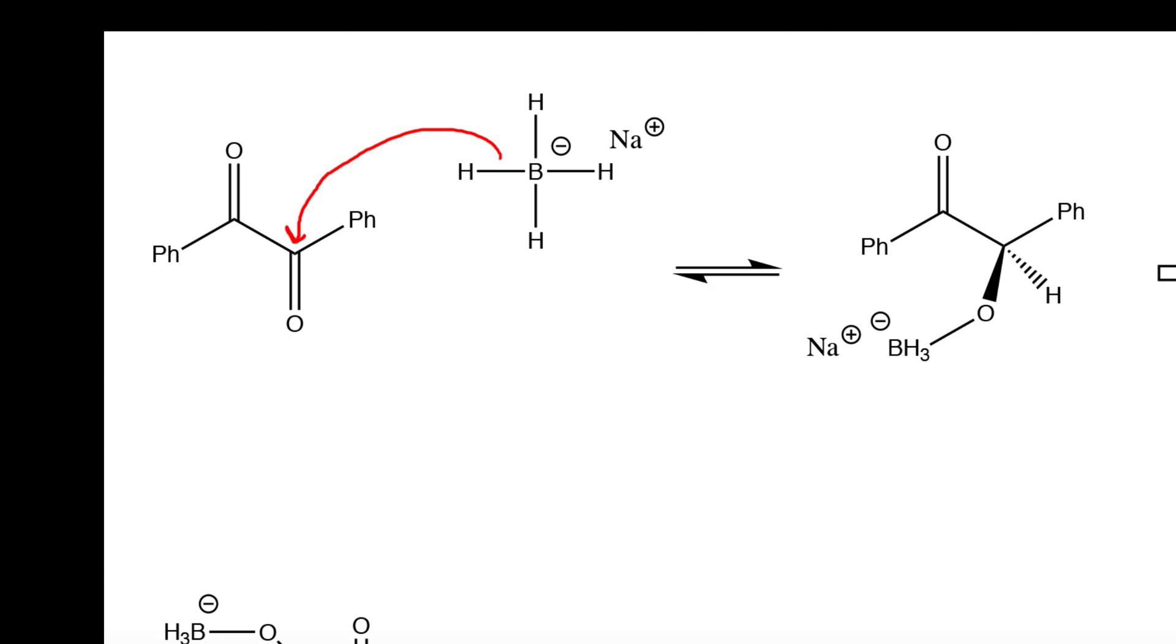However, what actually happens is the double bond will form a bond with this boron atom right here. And the result of that is this intermediate.